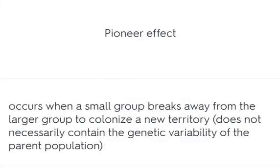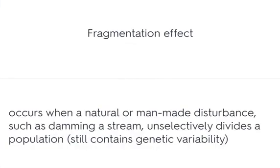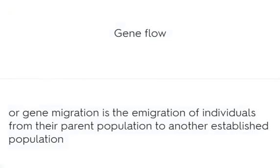The founder effect occurs when a small group breaks away from the larger group to colonize a new territory. The fragmentation effect occurs when a natural or man-made disturbance, such as damming a stream, unselectively divides the population. Gene flow or gene migration is the emigration of individuals from their parent population to another established population.